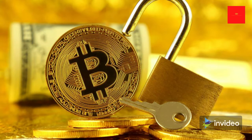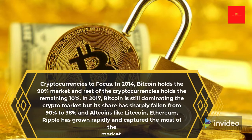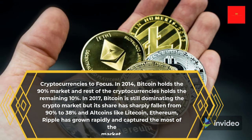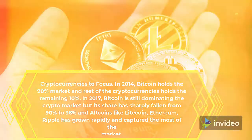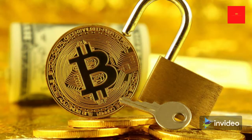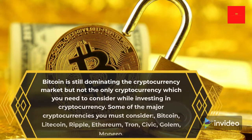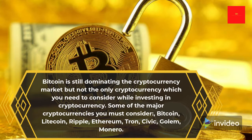Cryptocurrencies to focus on: In 2014, Bitcoin held 90% of the market and the rest of the cryptocurrencies held the remaining 10%. In 2017, Bitcoin was still dominating the crypto market but its share had sharply fallen from 90% to 38%, and altcoins like Litecoin, Ethereum, and Ripple had grown rapidly and captured most of the market. Bitcoin is still dominating but is not the only cryptocurrency to consider when investing.